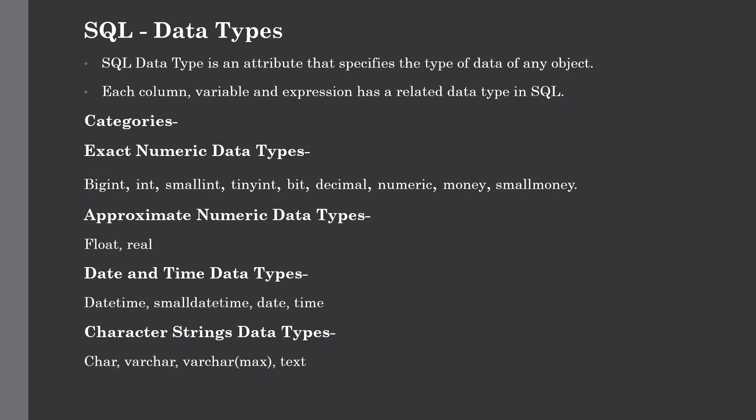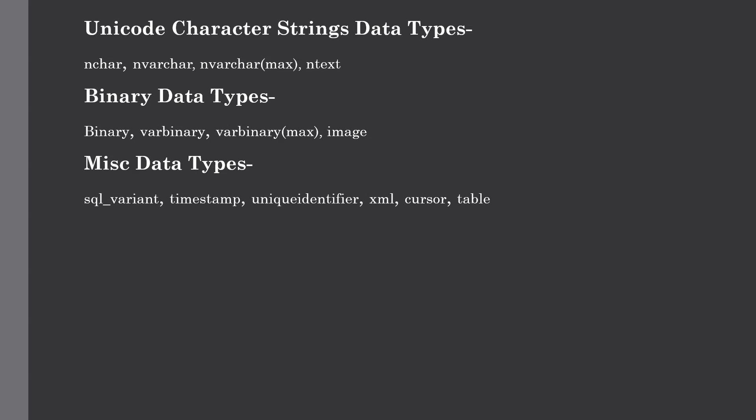Date and time data types include datetime, smalldatetime, date, and time. Character string data types include char, varchar, varcharmax, and text, used for combining characters and variables. Three less commonly used categories are unicode character string data types, binary data types, and miscellaneous data types, which we will discuss in further sessions.